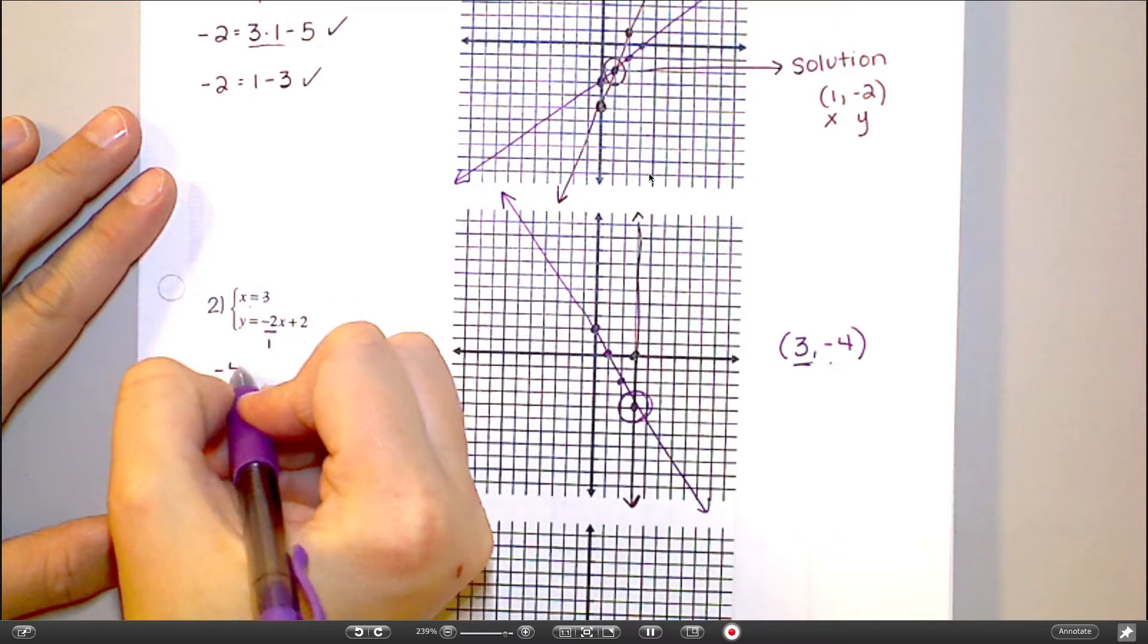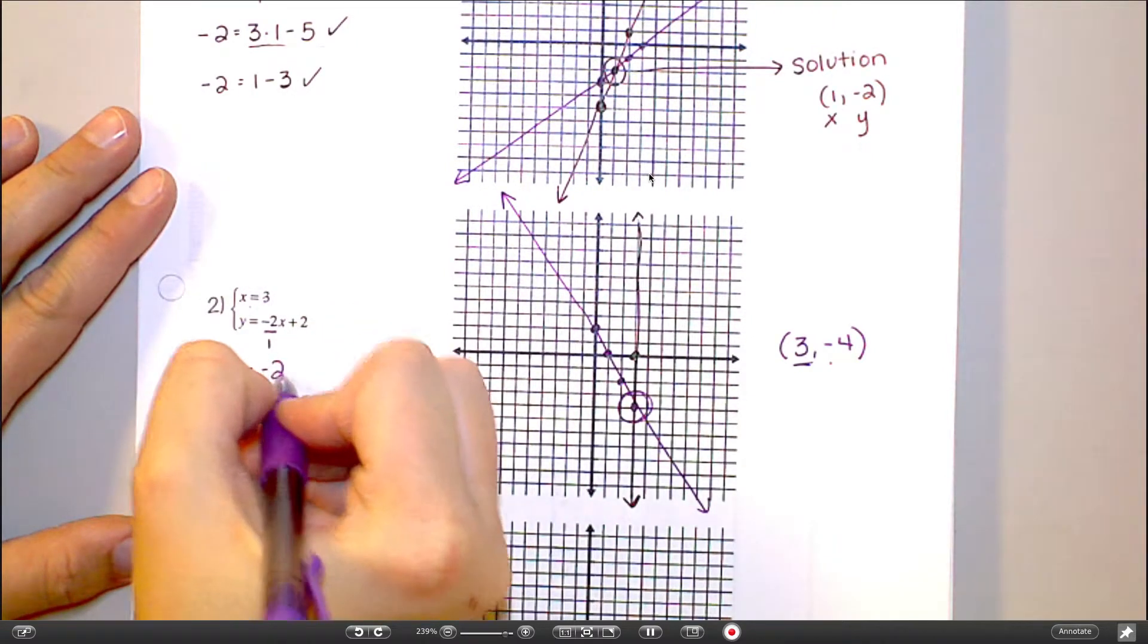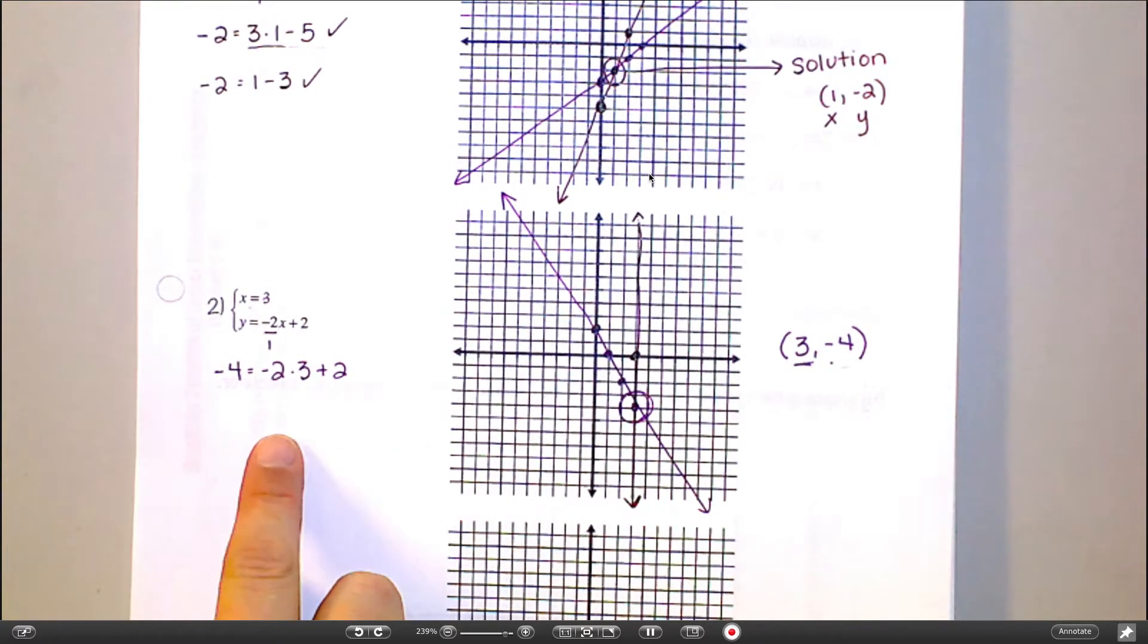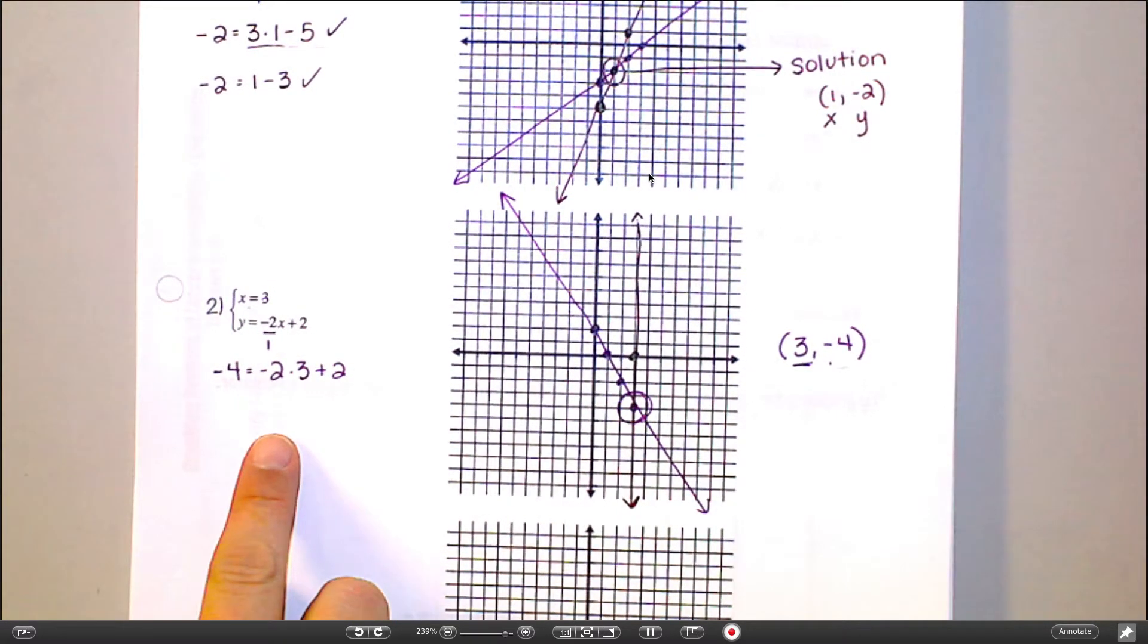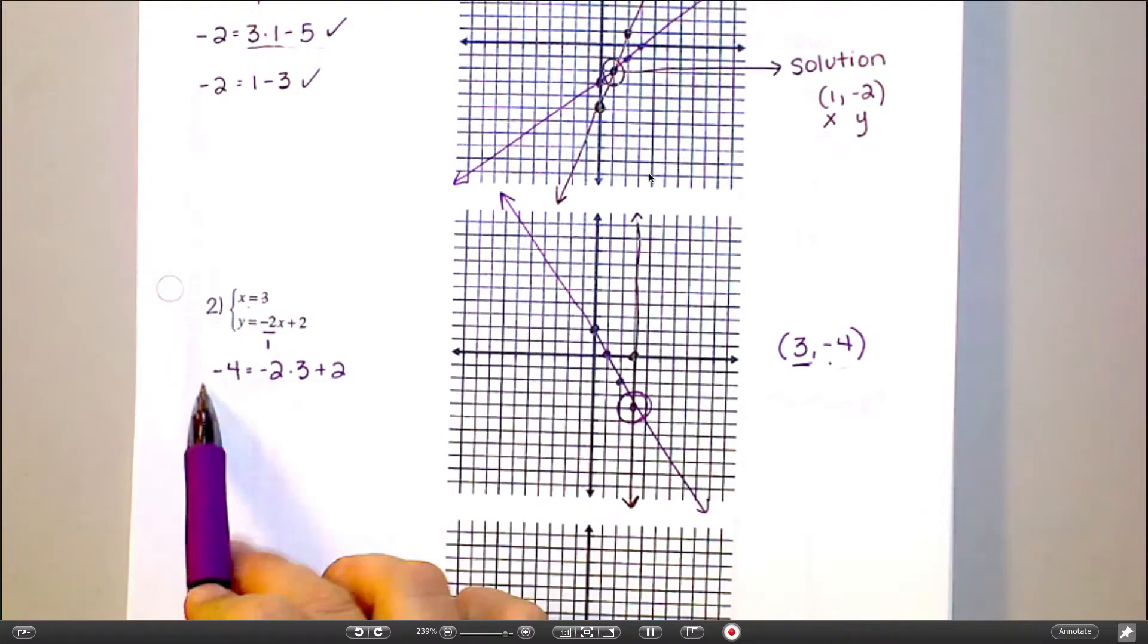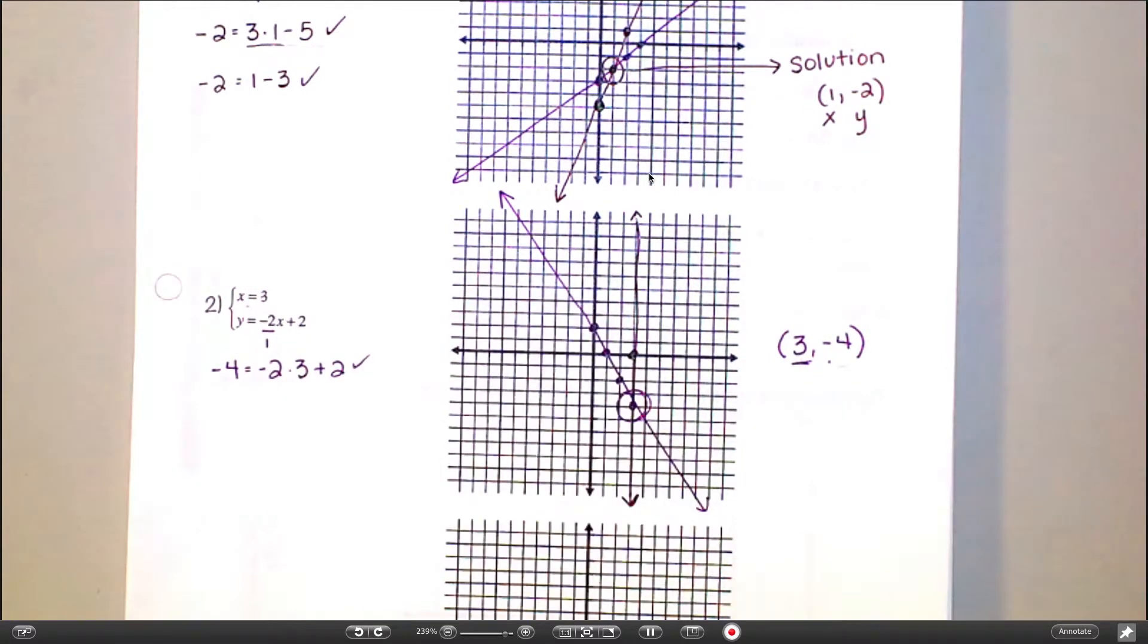Let's check the other one. So negative 4 equals negative 2 times 3 plus 2. This is not something, by the way, that you would have to write out every single time. Something, though, that you should do at least in your calculator. Double check it. Let's see. That's negative 6 plus 2 is negative 4. So, yep, that one works too. You think you got this?